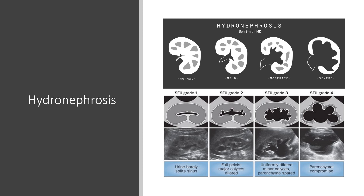Hydronephrosis is visualized by progressively enlarging anechoic areas that develop within the renal sinus. The degree of hydronephrosis has not been shown to be predictive of renal dysfunction, but studies have shown that the degree of hydronephrosis correlates with the overall size of the stone. There are no objective measurements available for point-of-care physicians to reliably distinguish between different grades of hydronephrosis; instead, subjective descriptions should be used.